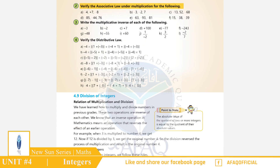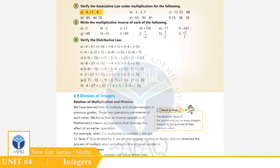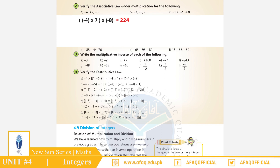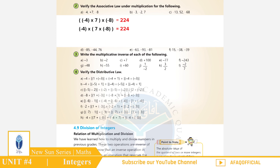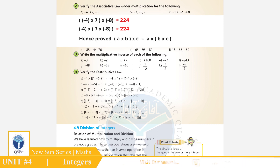Question 2: Verify the associative law under multiplication. Part A: (−4) × (+7) × (−8) = 224۔ Now multiply in order (−8) × (+7) × (−4) = 224۔ So it is proved: A × B × C = C × B × A.